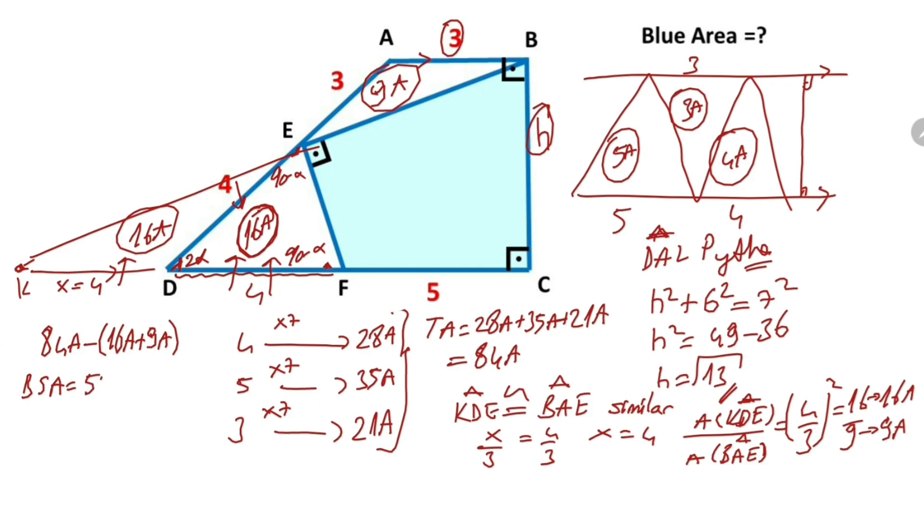Now let's calculate the trapezoid area. Trapezoid area equals (3 plus 3 plus 5) over 2 times height, which is root 13. This equals 84a.